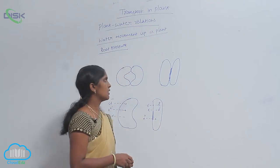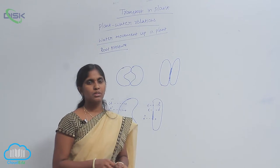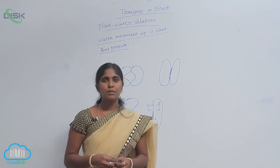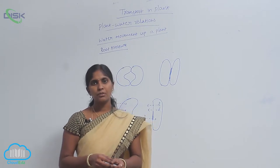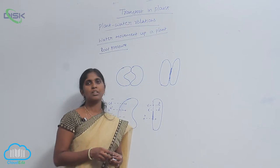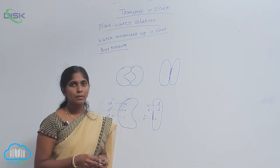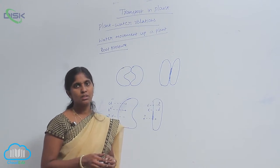Transpiration is loss of water in the form of vapour. The plants absorb the capillary water. Out of 100 percent of the water, only 1 percent of the water is being utilized for metabolic activities of plants, and remaining 99 percent of the water is lost through transpiration.